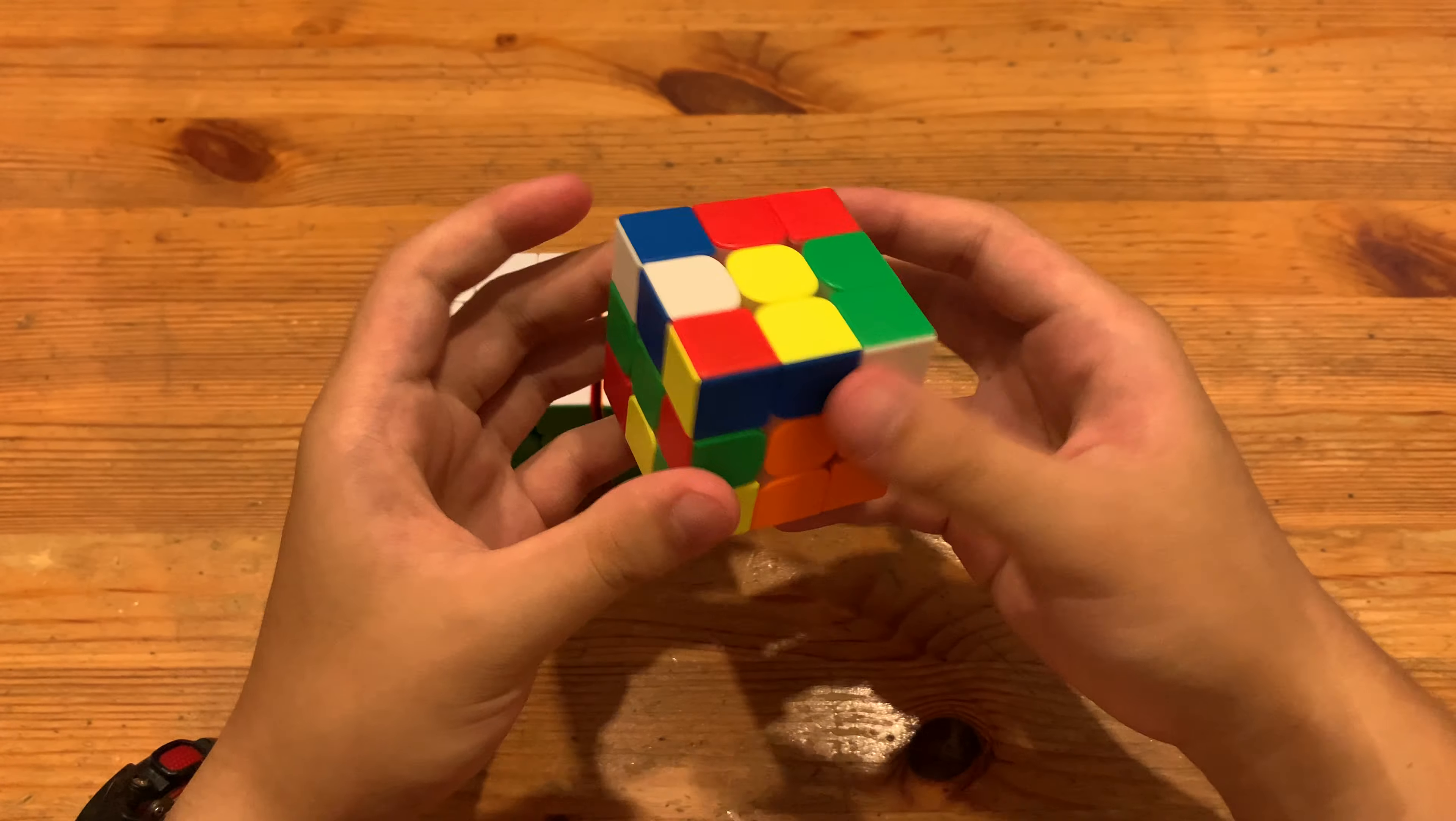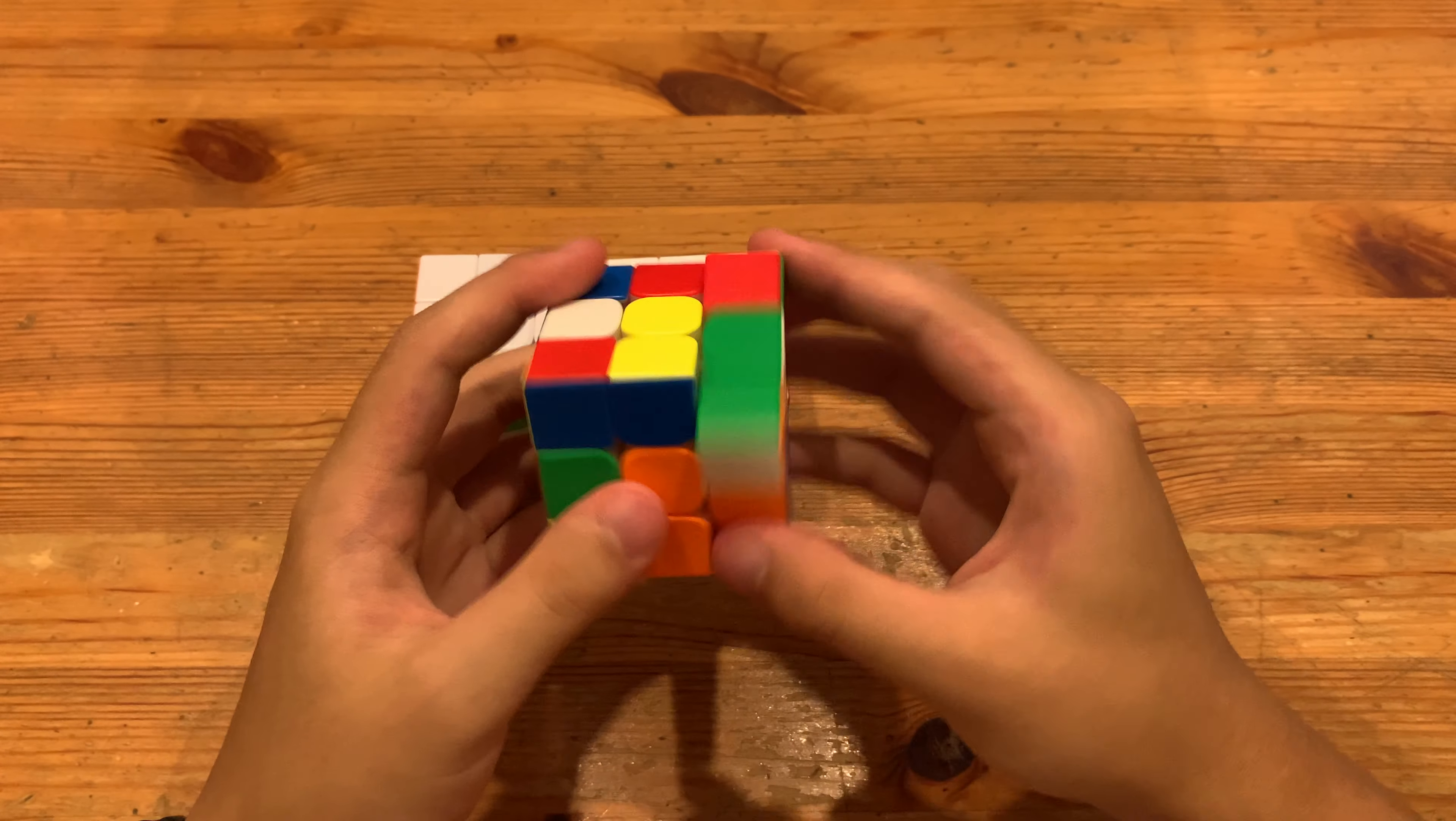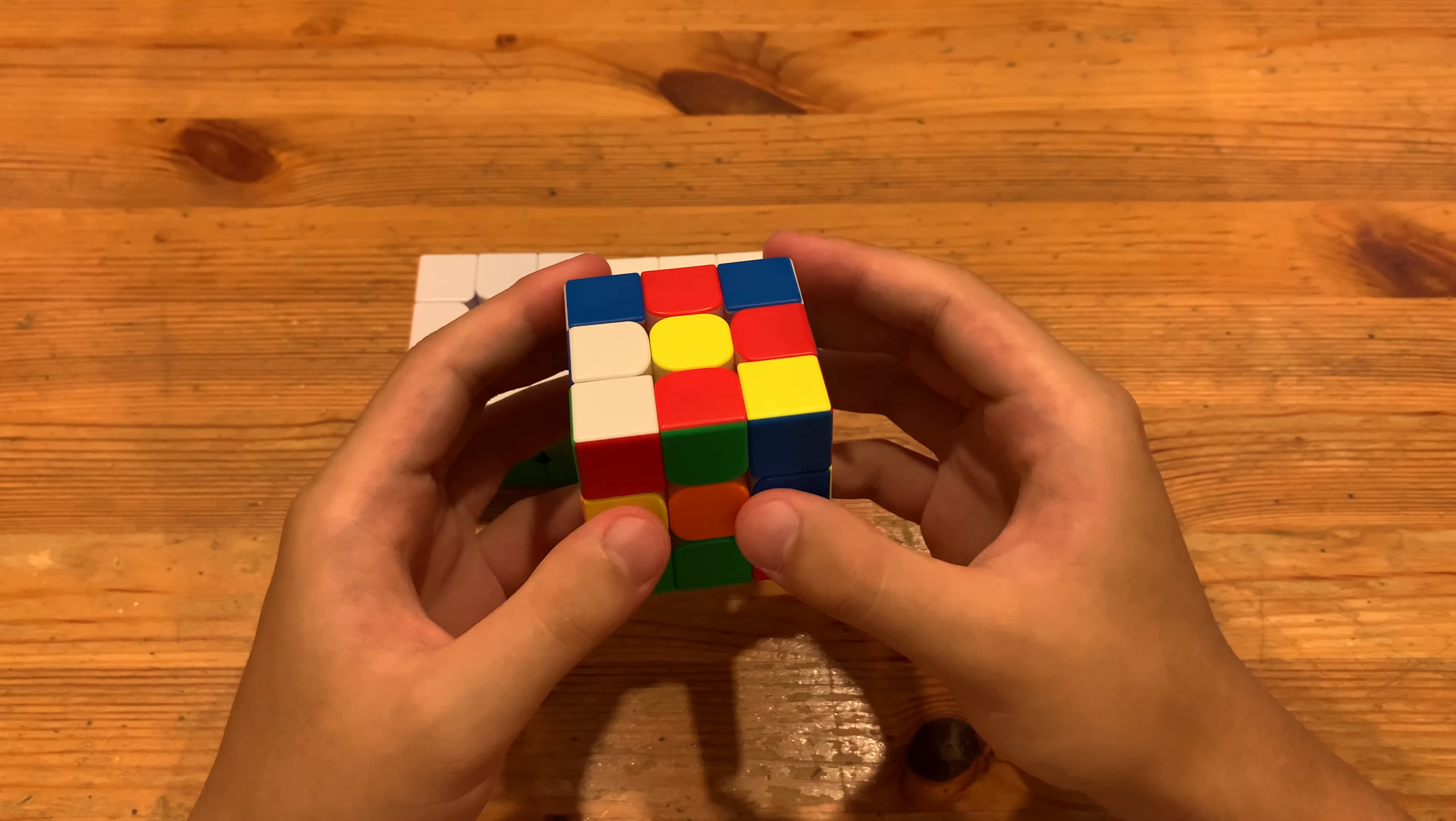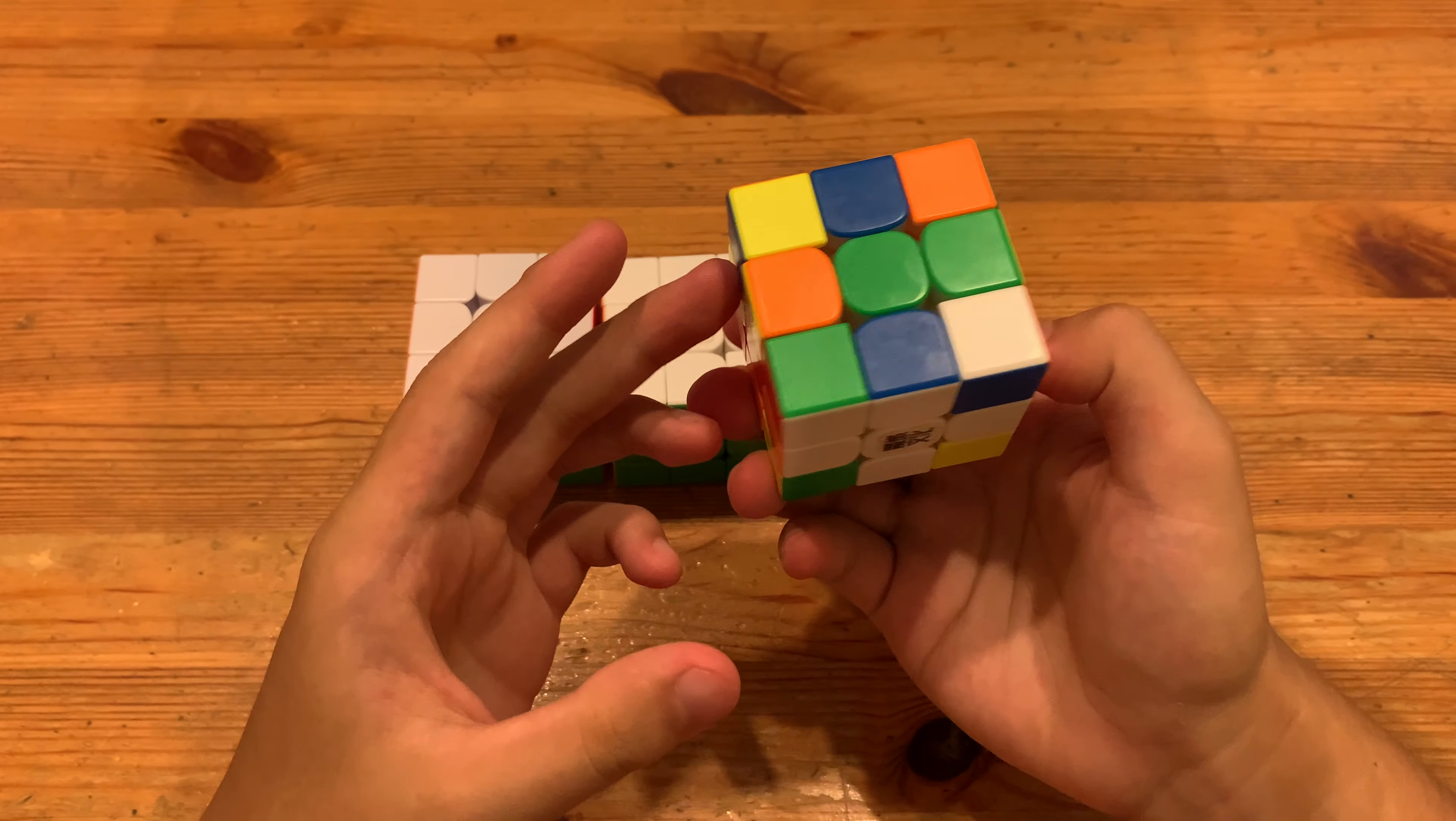And for the final solve, I already have two of my cross edges solved. And what I can do here is R' D F to enter this cross edge. And then here I'll just do DL2. And then finally align the cross with the D2.